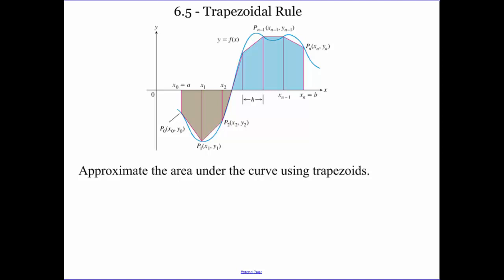Today we're going to be talking about the trapezoidal rule. Using trapezoids to approximate the area is another way that we can approximate area under the curve instead of using our Riemann sums like we started doing in the beginning of the chapter.